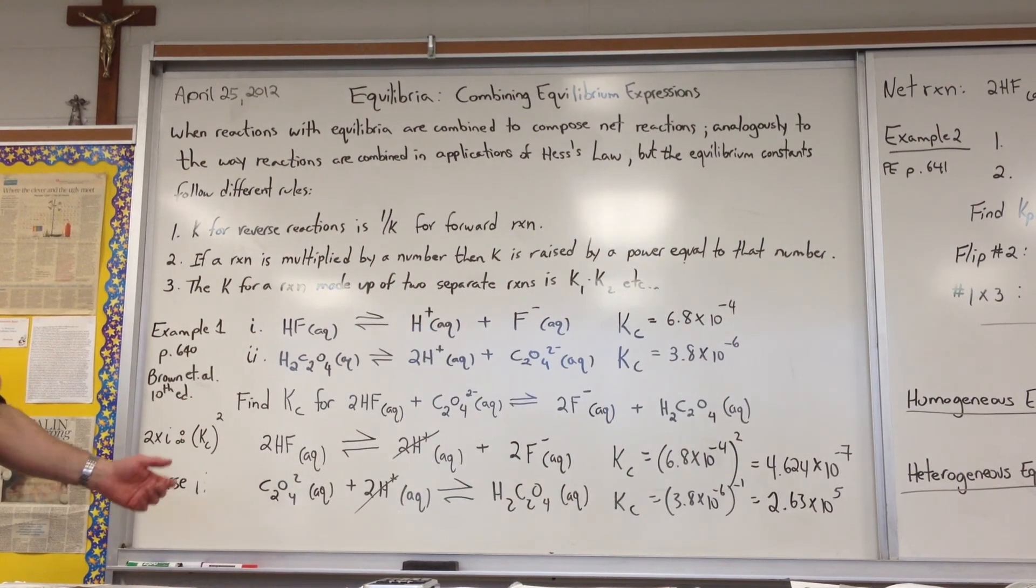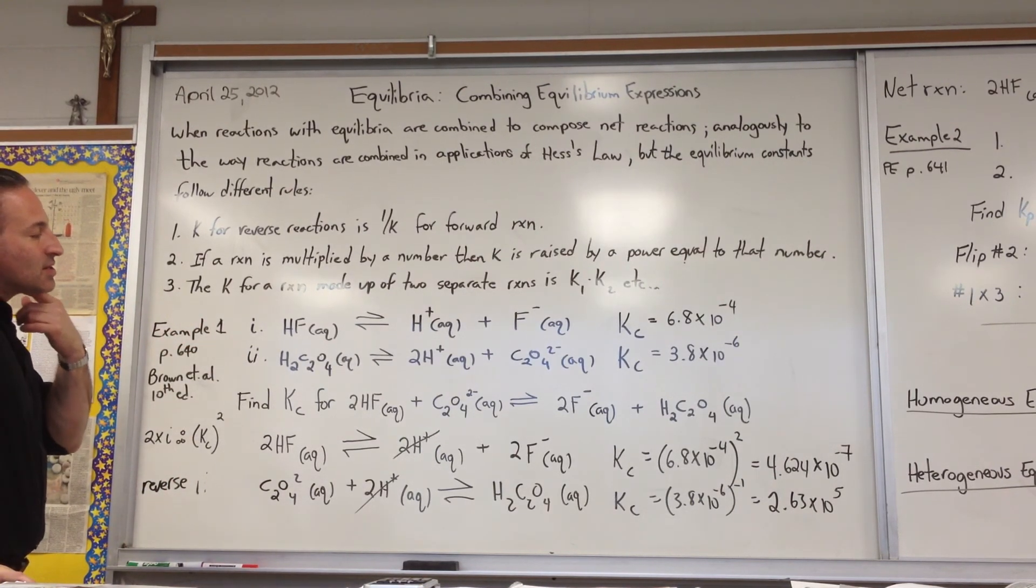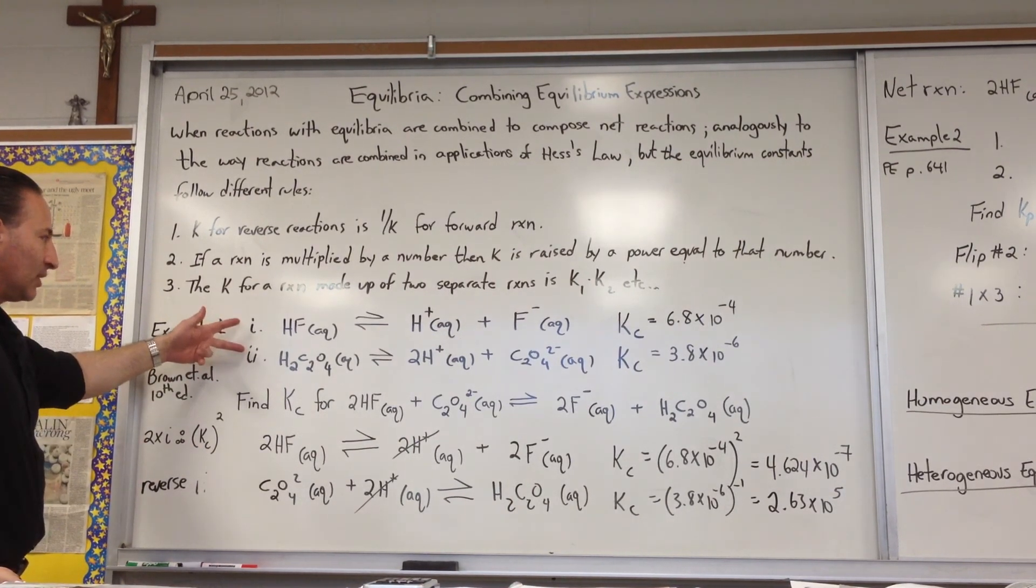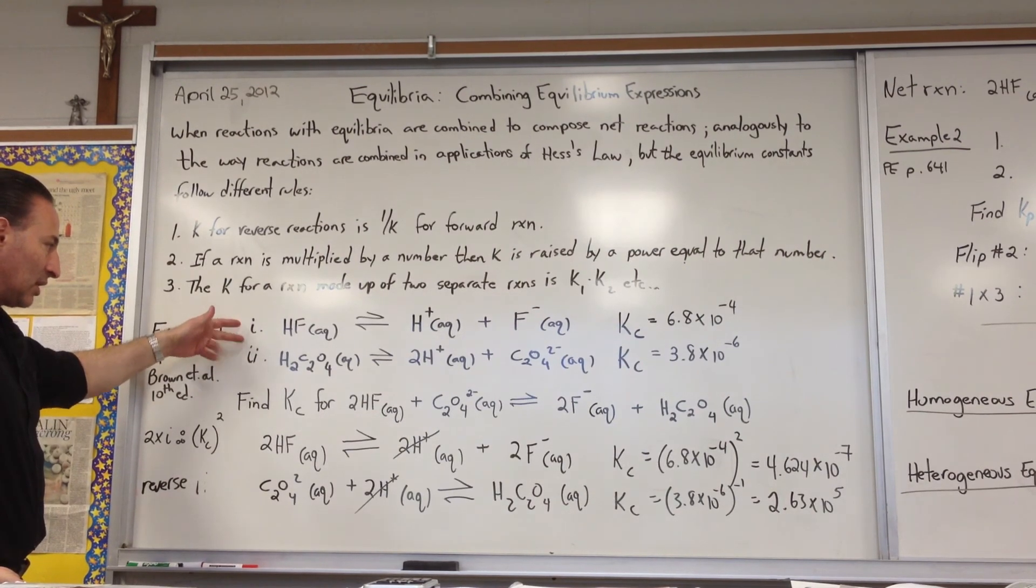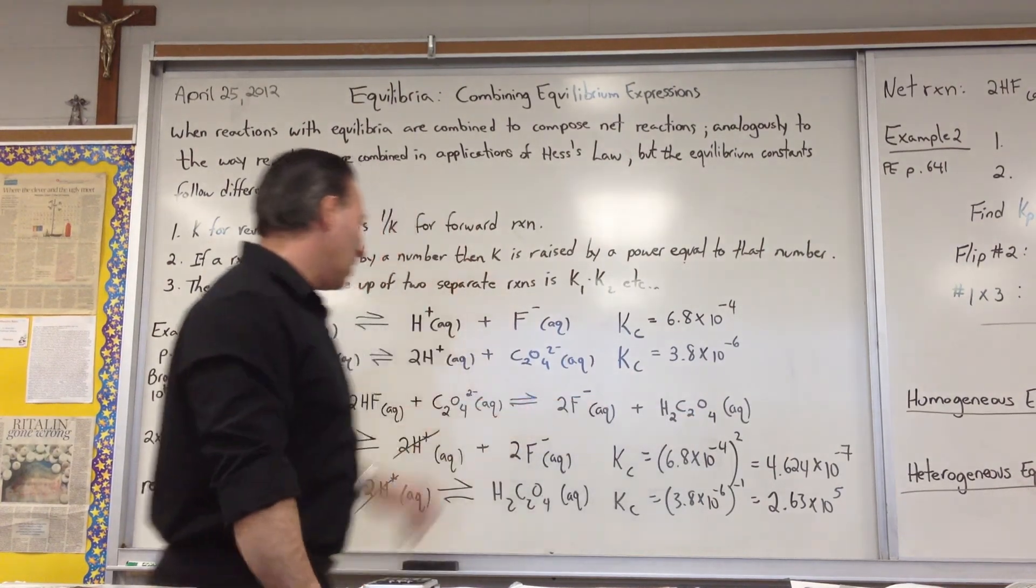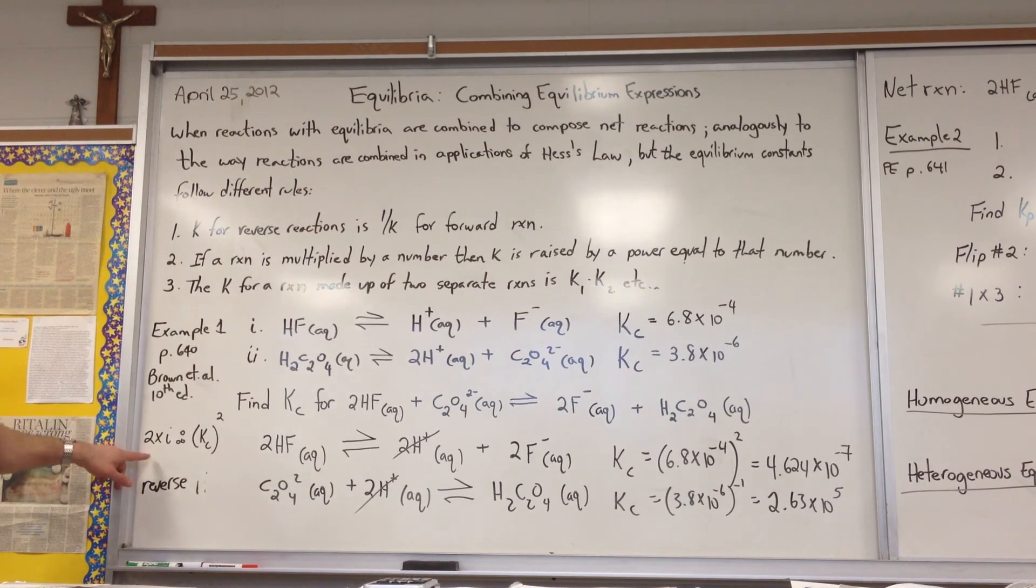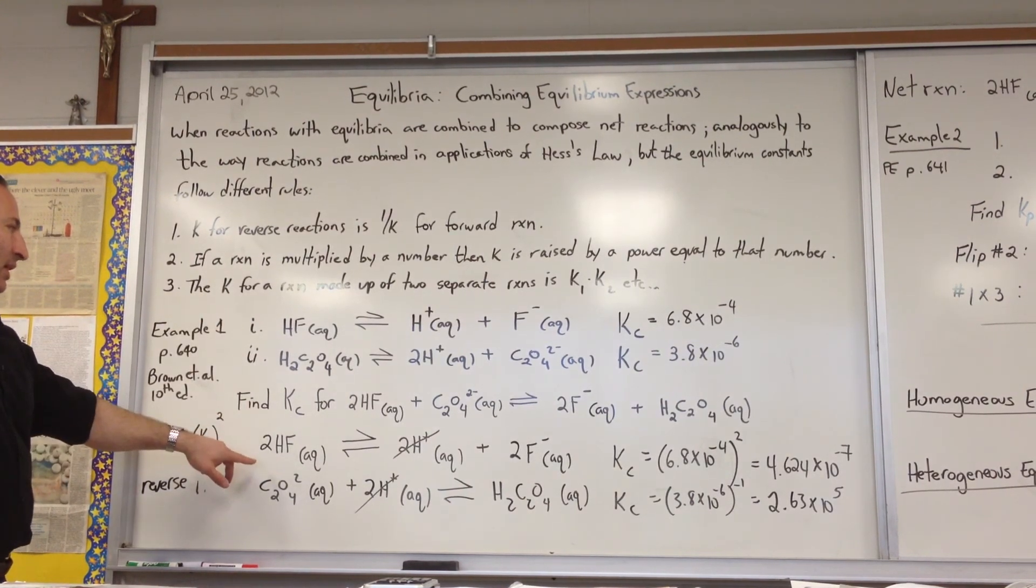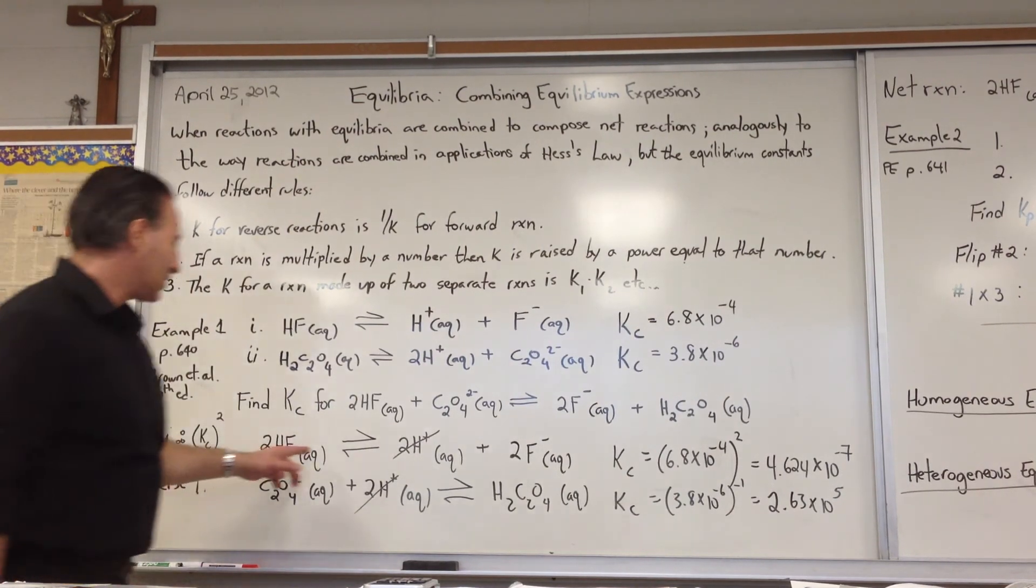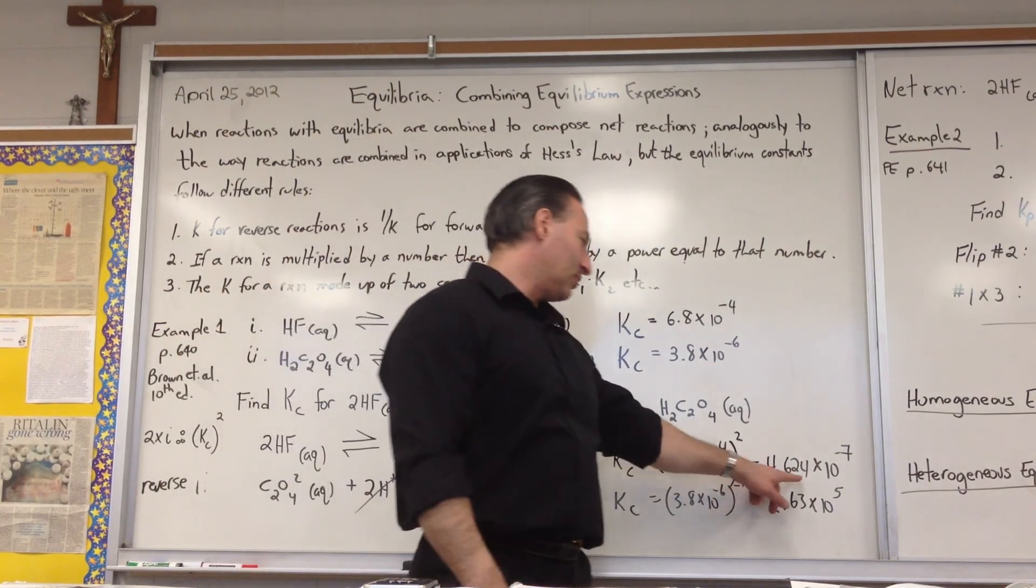The first two reactions are the dissolution of hydrofluoric acid and the dissociation of oxalic acid. The two reactions are combined in a manner like they're combined when you use Hess's law and you're supposed to find this. This is your target equation. And what is the equilibrium constant for that target equation? So the first step is to double the first reaction because we need two hydrofluoric acids. When you double the reaction, you square the equilibrium constant. We get this value for it.